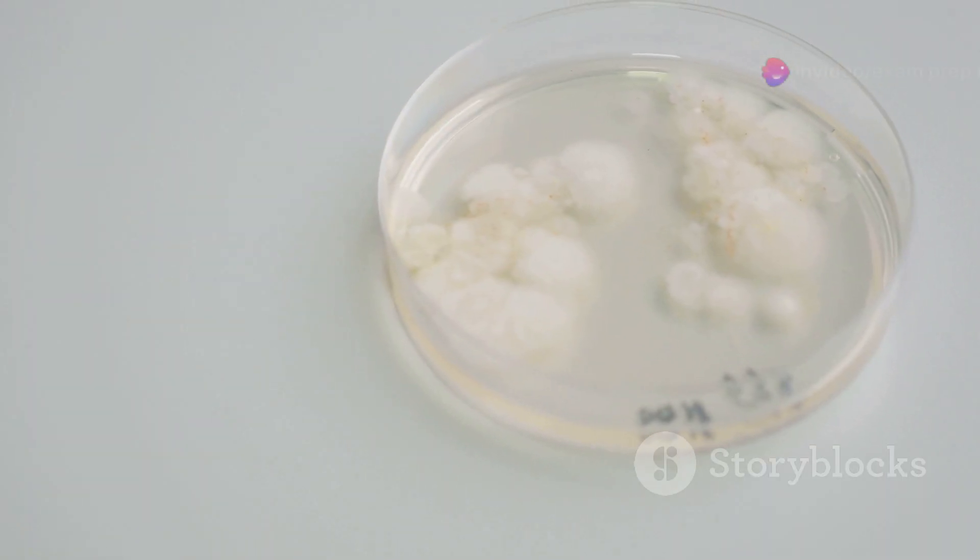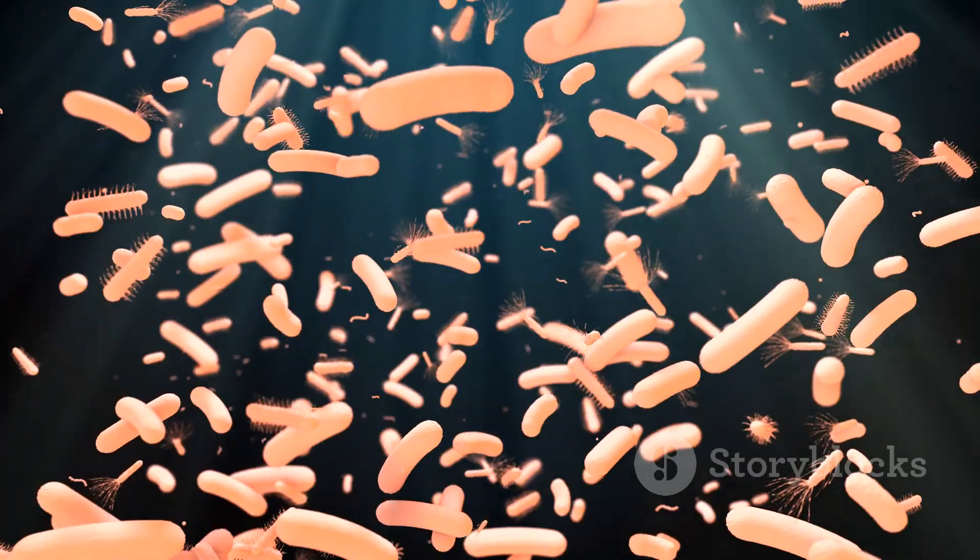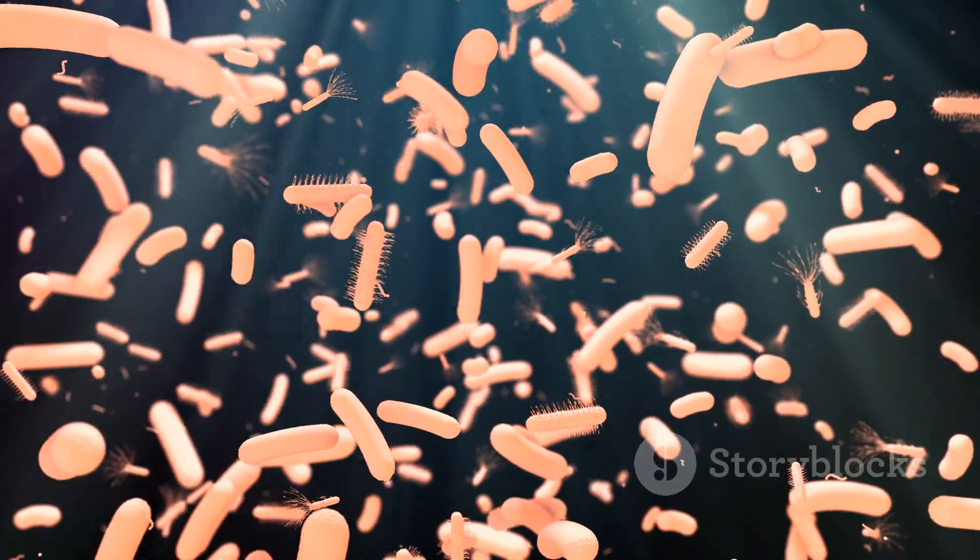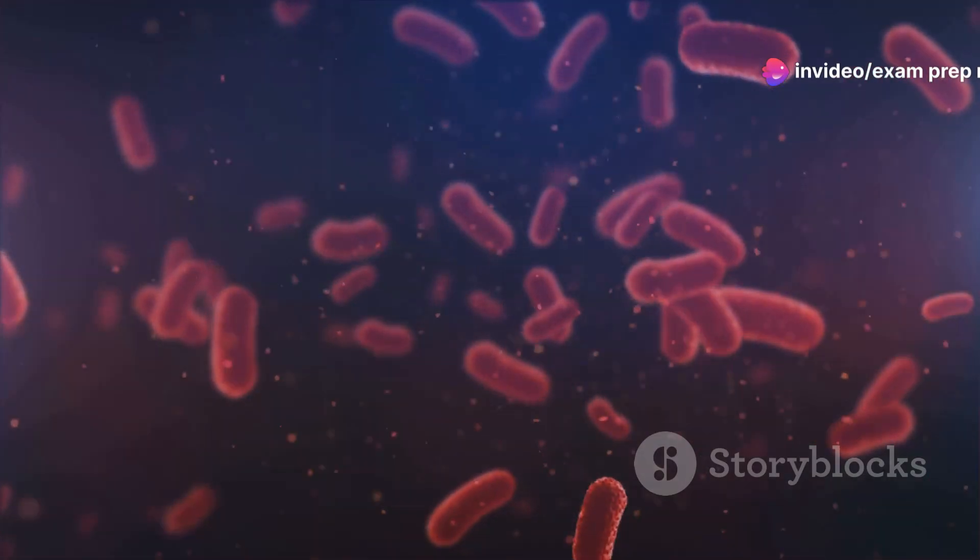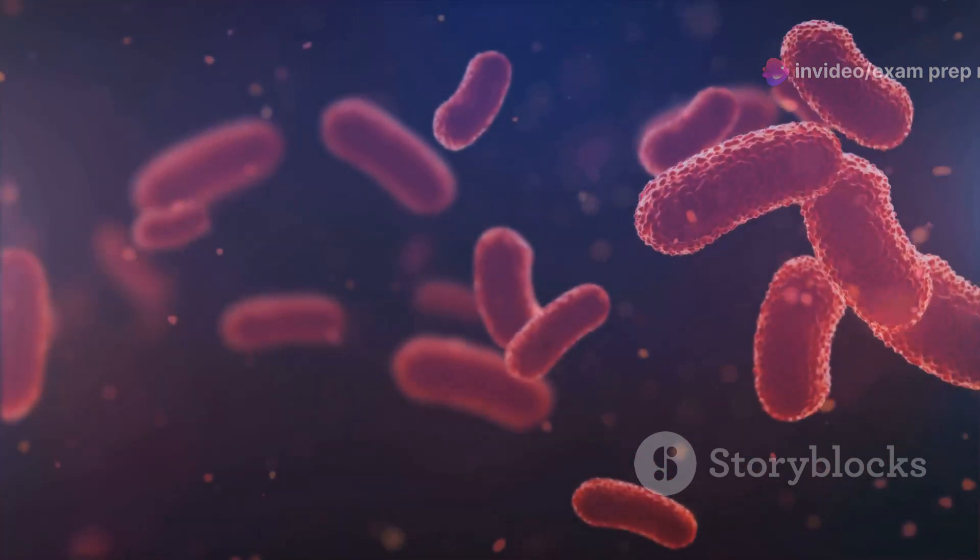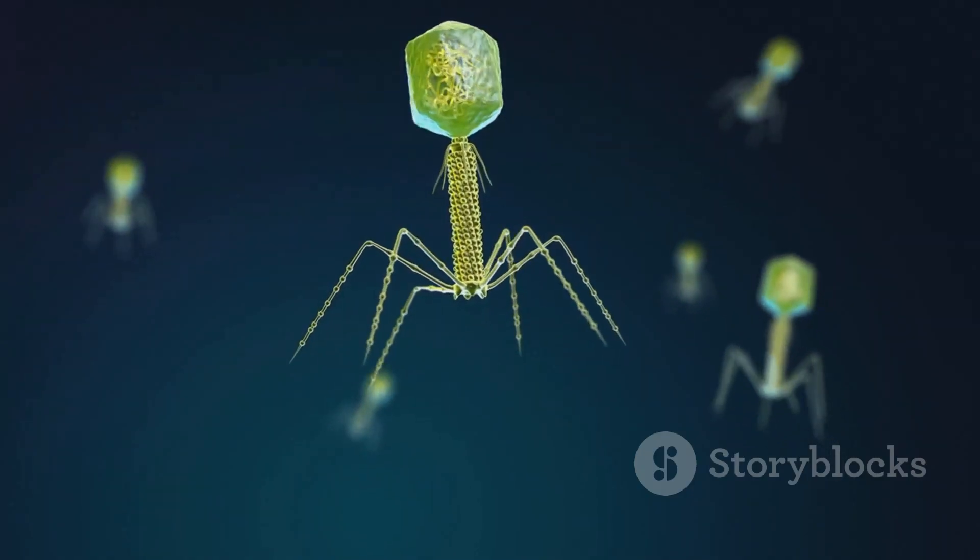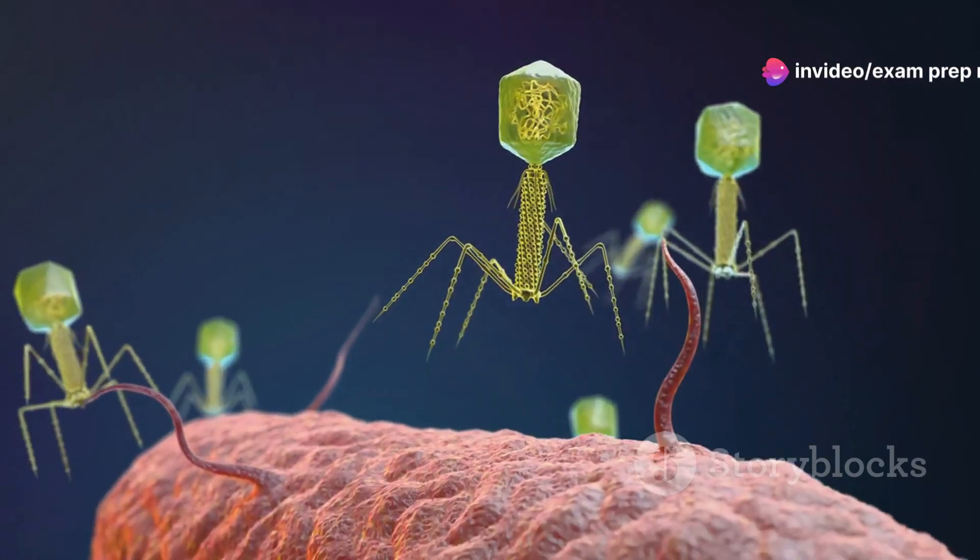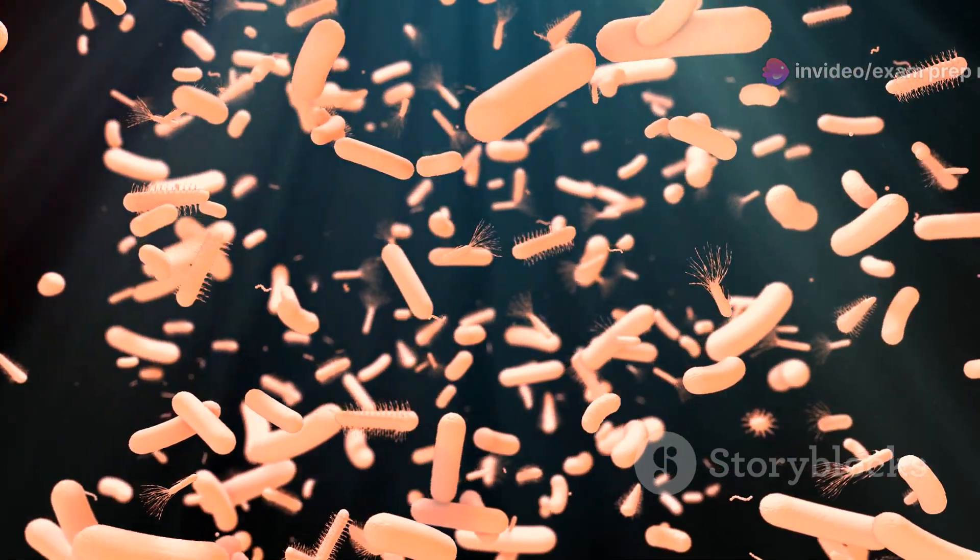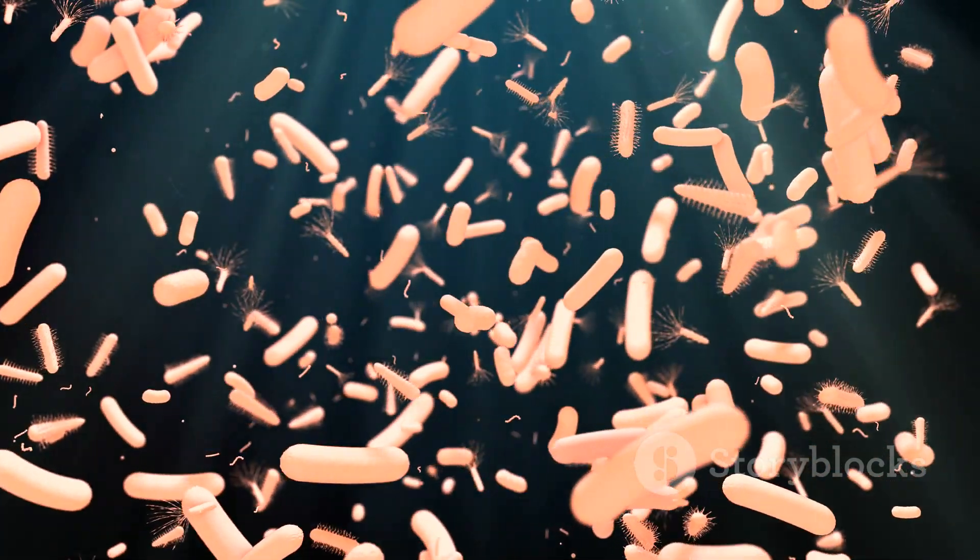While binary fission is efficient for rapid population growth, it doesn't introduce much genetic diversity. To mix things up, bacteria have developed other methods of genetic exchange. Conjugation is like bacterial sex, where two bacteria connect via a pilus, a bridge-like structure, and exchange genetic material. Transformation is like bacterial recycling, where bacteria scavenge DNA from their surroundings, often from dead bacteria. Finally, transduction is like bacterial hijacking, where viruses called bacteriophages accidentally transfer bacterial DNA between cells. Through a combination of rapid division and genetic exchange, bacteria have become incredibly successful at adapting and thriving in diverse environments.